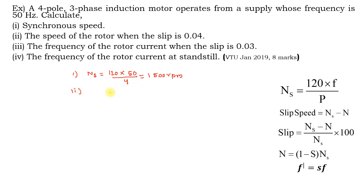The second one: find out the speed of the rotor. The rotor speed n = (1 − s) × ns, where slip s is given as 0.04 and ns is 1500 rpm. So the rotor speed is 1440 rpm.